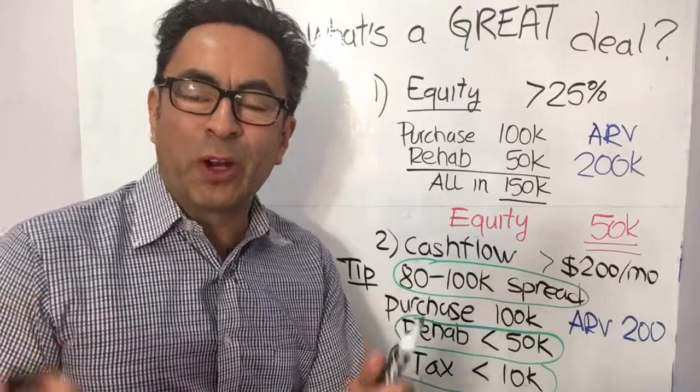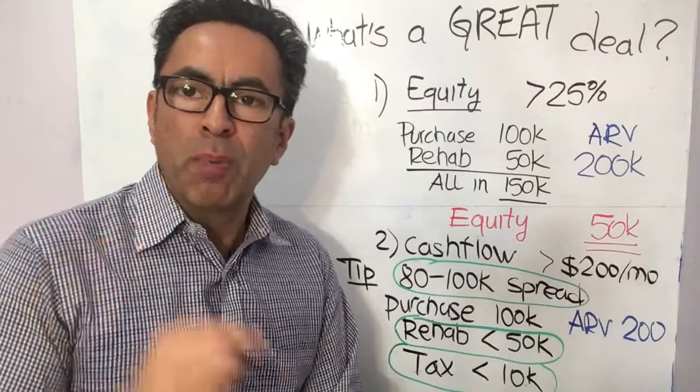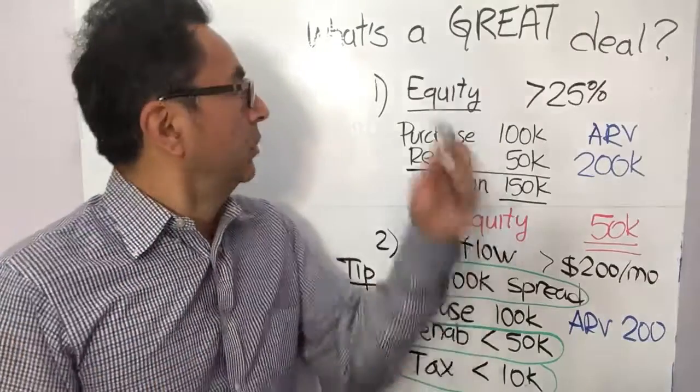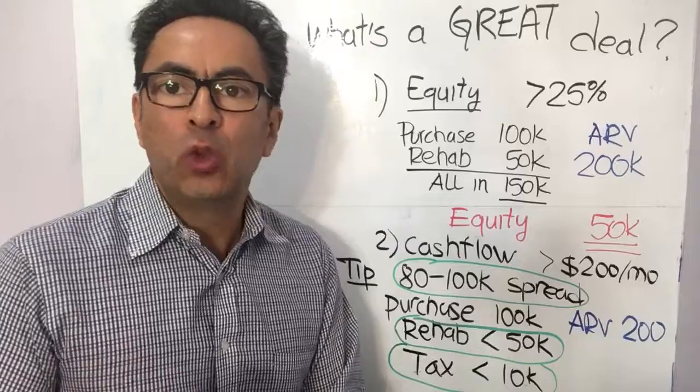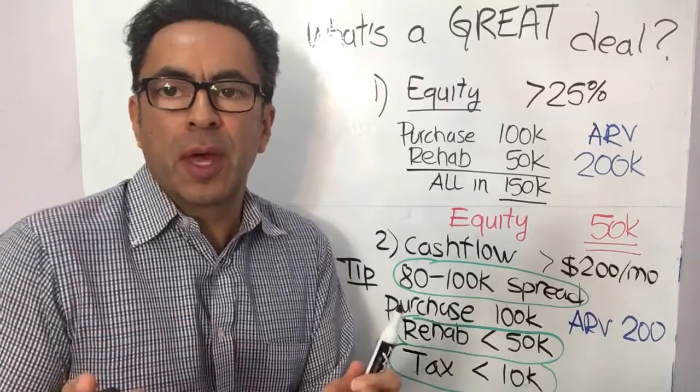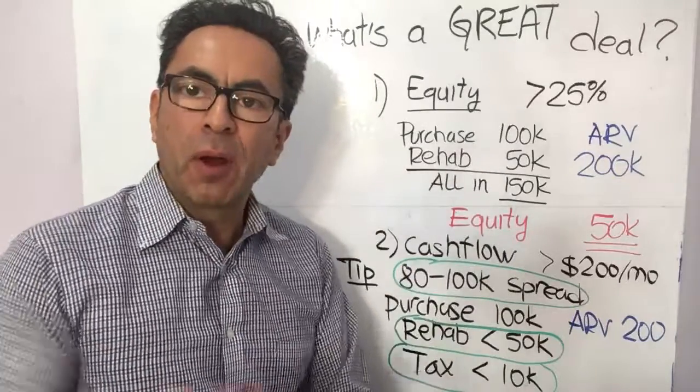Let's talk about what's a great deal. There are two components to a great deal. Number one, you have to have equity of at least 25 percent. So what does that mean? That you buy the property for a hundred thousand.